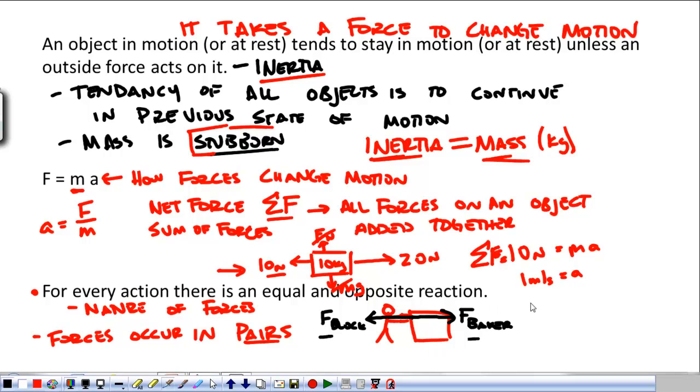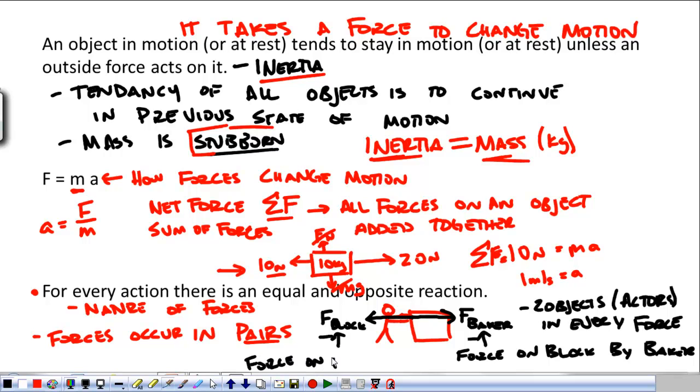Any time that there's a force, two objects are involved. Two objects or actors in every force. The two objects here are me and the block. The first one is the force on the block by Baker. The reaction force pair to that is the force on Baker by the block. That's an action-reaction force pair. These will be opposite in direction and equal in magnitude. Now things get very tricky the more we look at the third law. So that's what we're going to look at next.